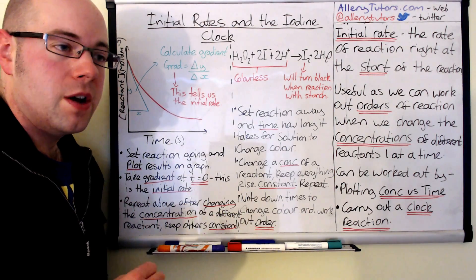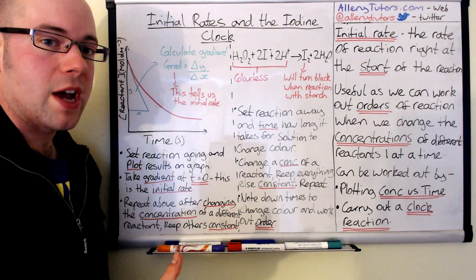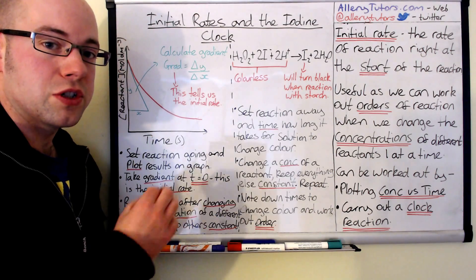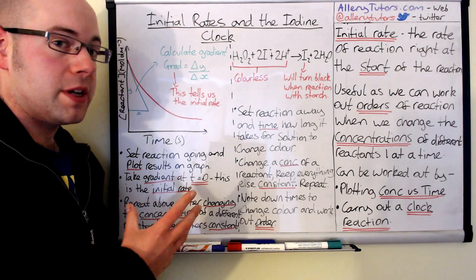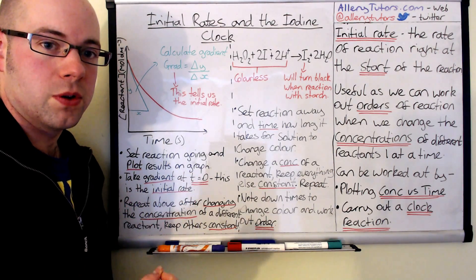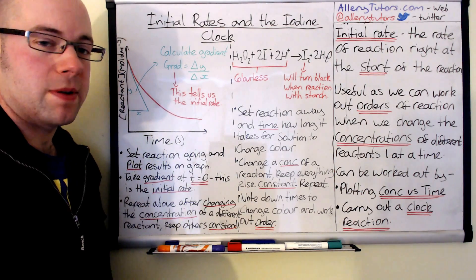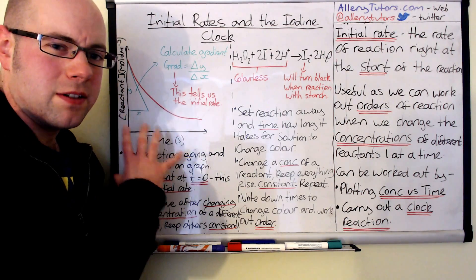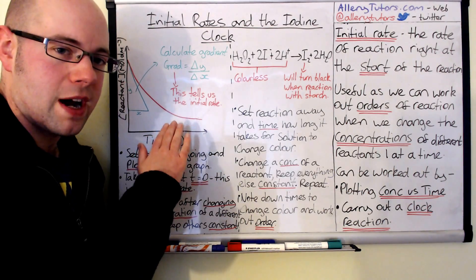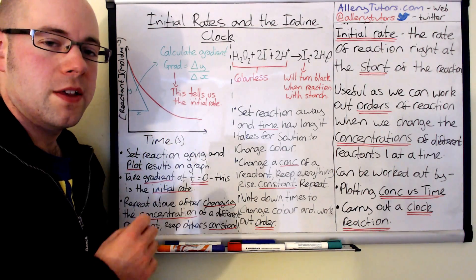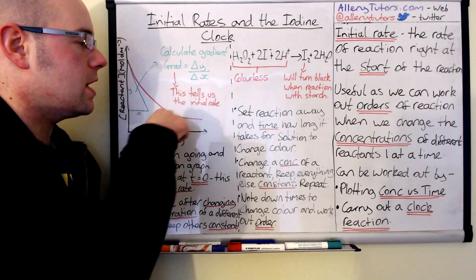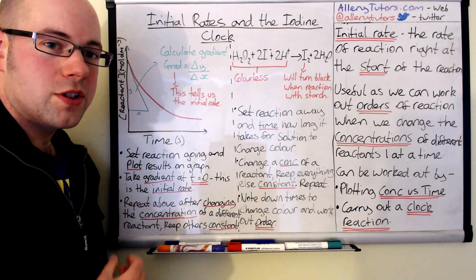For example, if we double the concentration of one reactant and that has an effect on doubling the rate, then what we can say is that is first order with respect to that reactant. That's effectively how we do it. That's quite time consuming because you have to draw a graph every time you want to work out the initial rate of reaction.